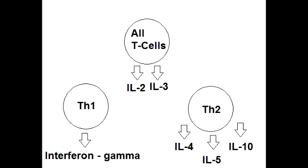What is the function of interleukin-5? The function of interleukin-5 is to promote differentiation of B-cells. They also enhance class switching to IgA and stimulate the growth and differentiation of eosinophils.